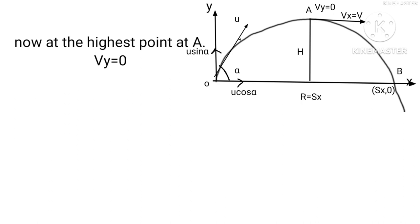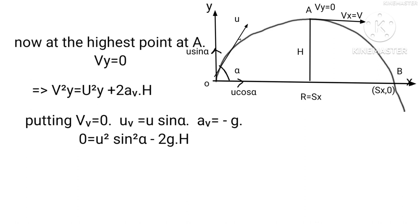Now at the highest point A, Vy equals 0. Using Vy² equals Uy² plus 2·ay·H, and putting Vy equals 0, Uy equals U sin α, and ay equals minus g, we get 0 equals U² sin² α minus 2gH. Hence H equals U² sin² α upon 2g.